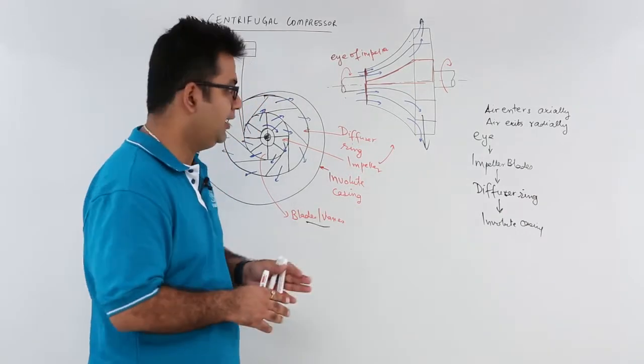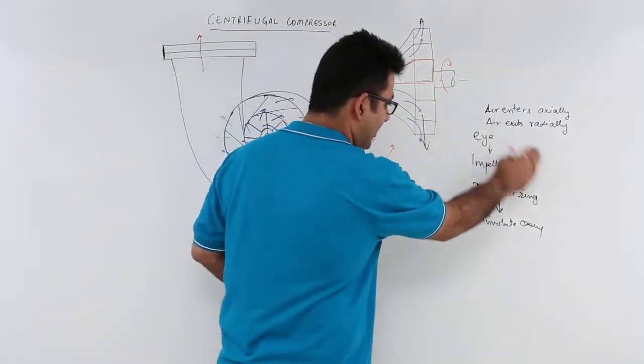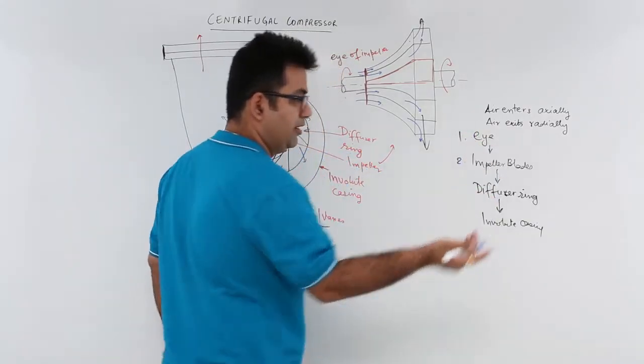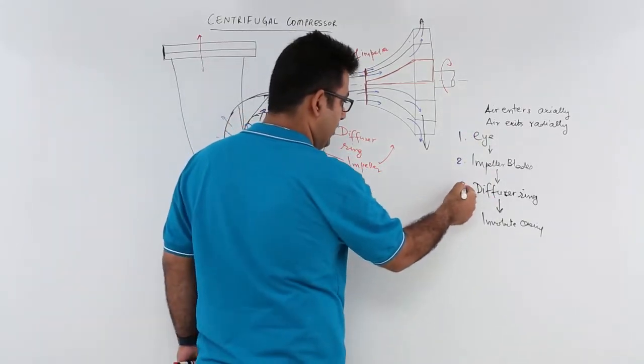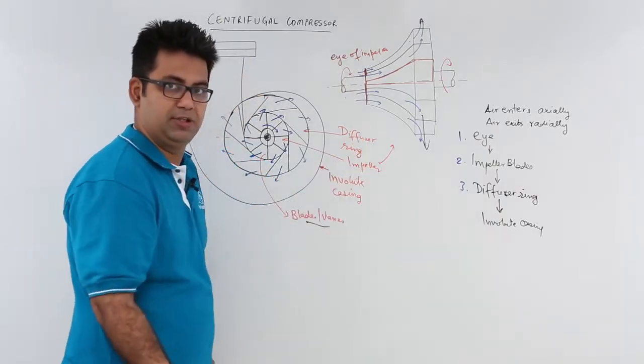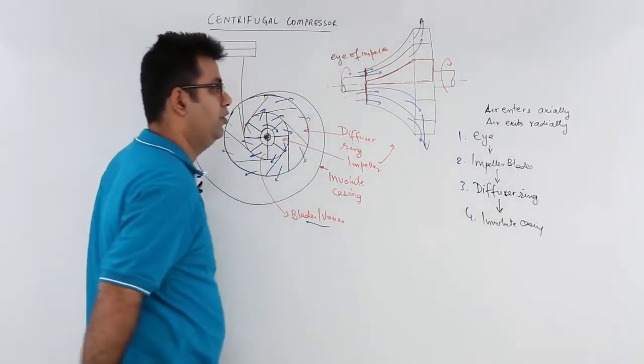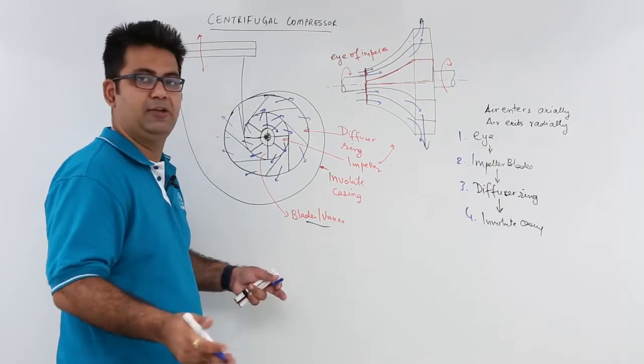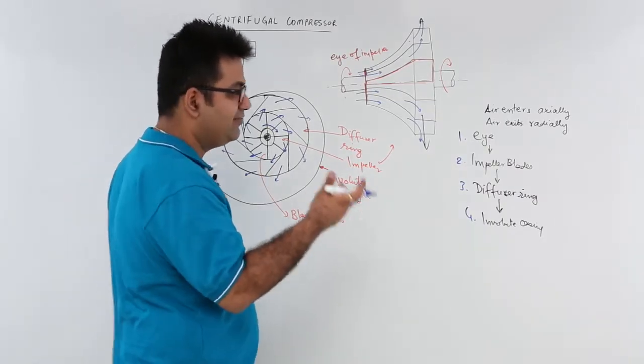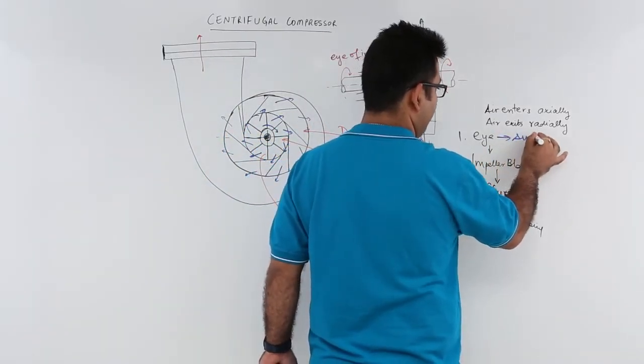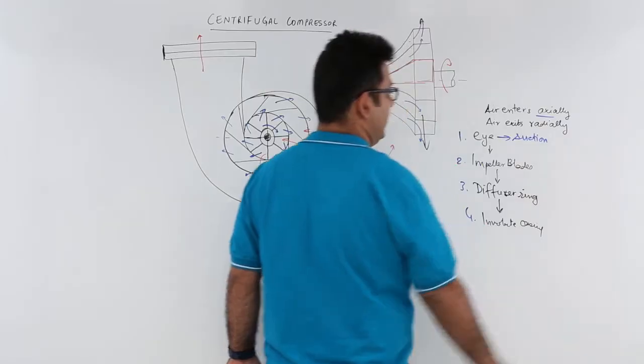So in a nutshell, this is how the air moves about. So the first step, it enters the eye. The second step goes into the impeller blades. Third step is led to the diffuser ring. And fourth, into the involuted casing. Now what is going on in each of these? Eye is where the suction takes place. So this is the area of suction and it is axial.